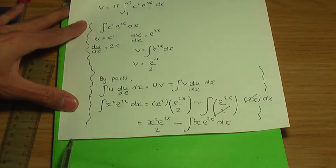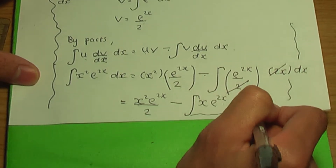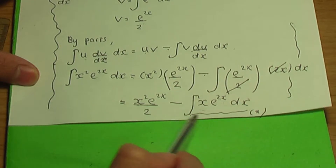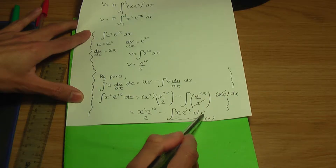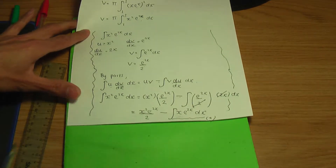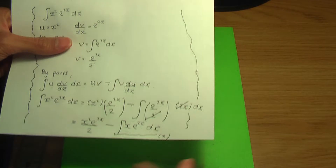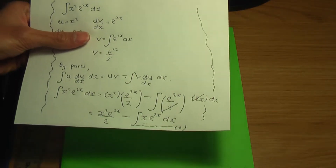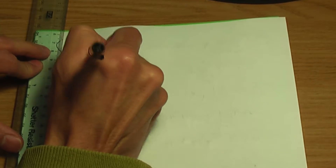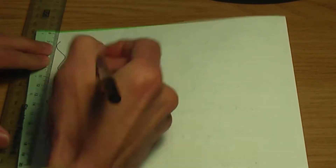Looking at that remaining integral, I'm going to call it star. To integrate x e to the 2x, we need to apply integration by parts again. So let's do a continued side calculation: star is the integral of x e to the 2x with respect to x, and we'll use by-parts again, taking u to be x and dv over dx to be e to the 2x.